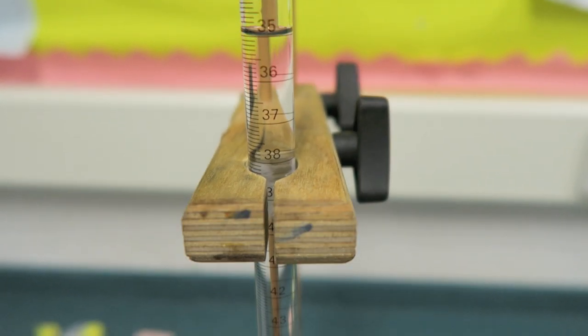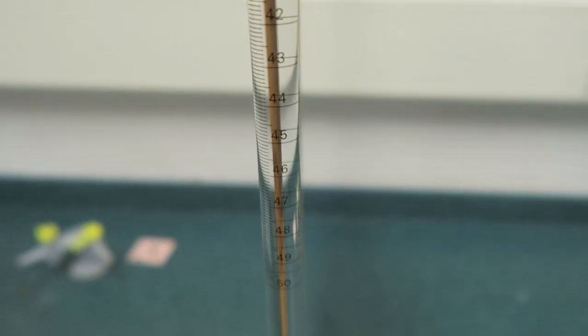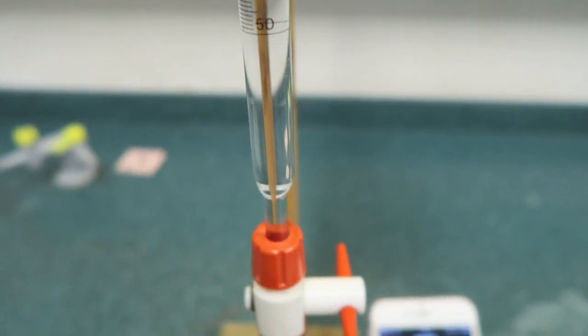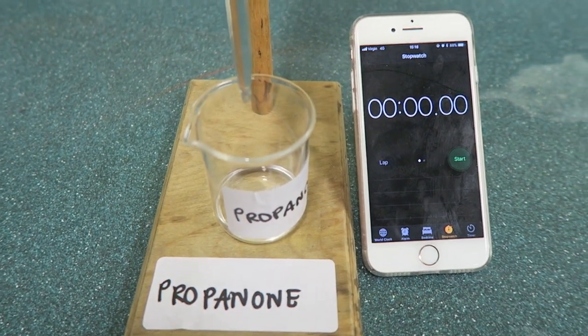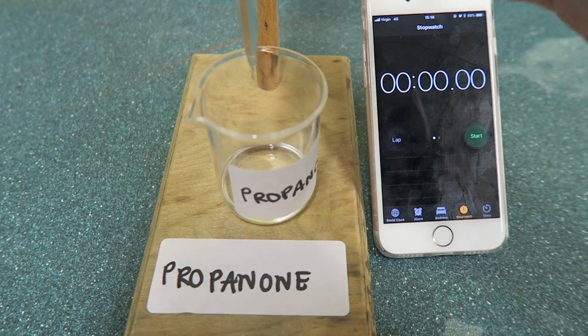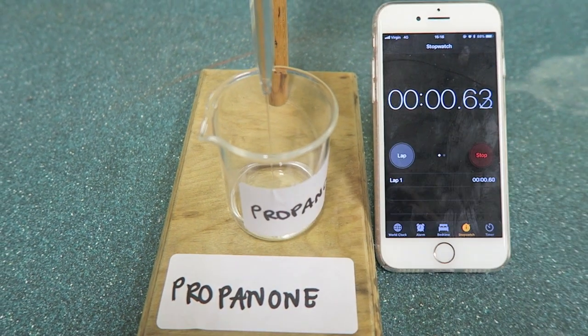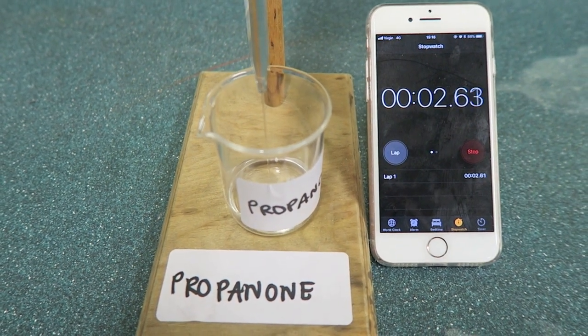In this first experiment a burette was filled to 35 with propanone. I then opened the top of the burette and emptied the burette until it hit the 50 line. I timed how long it took for this to happen. You'll be able to see this in the video.